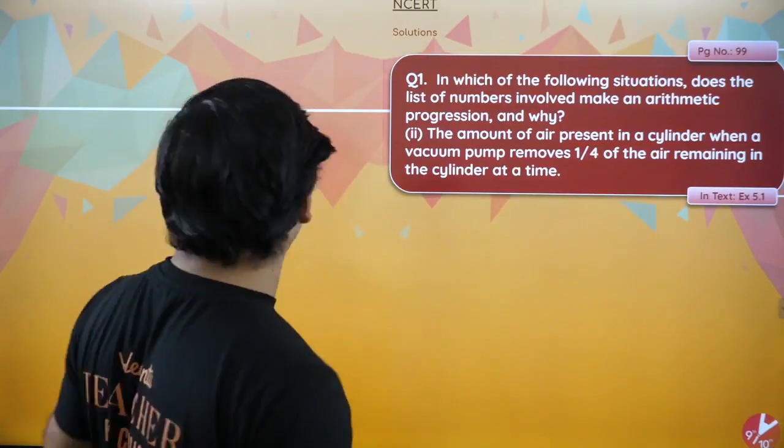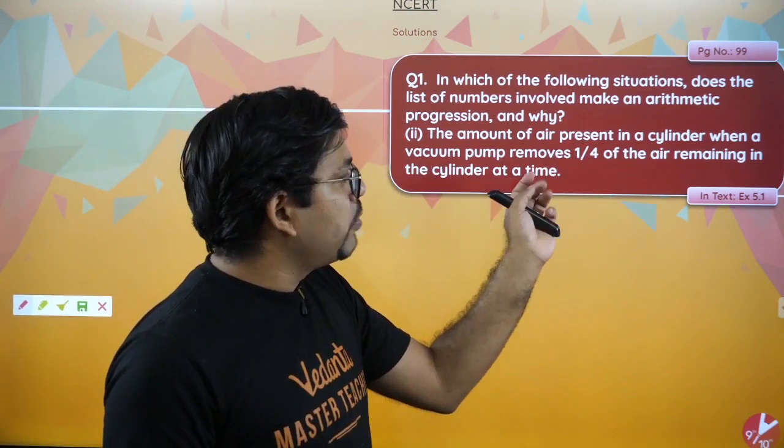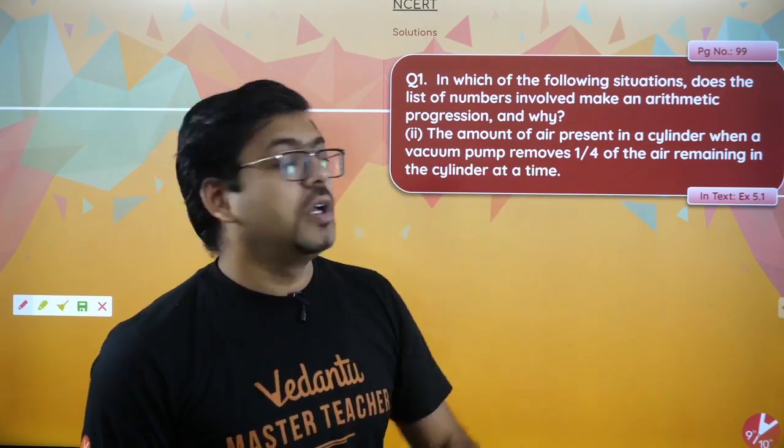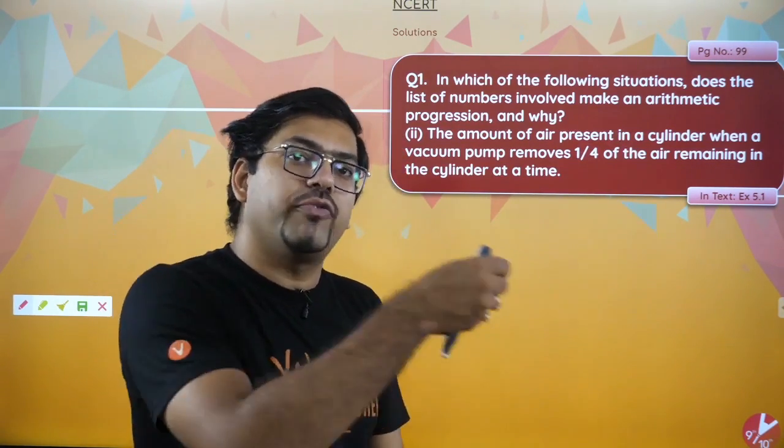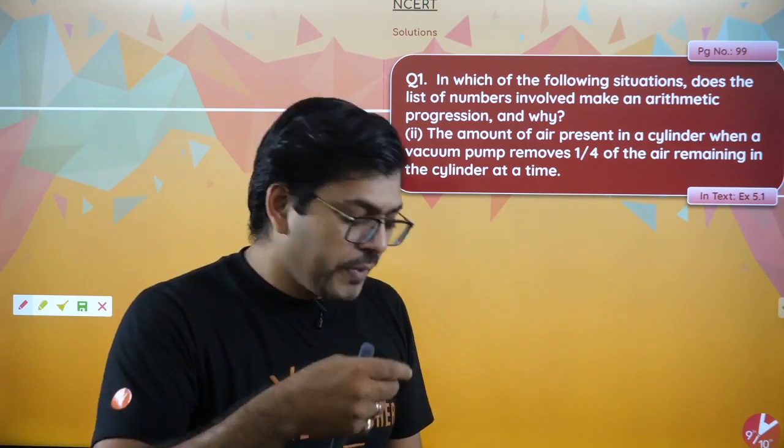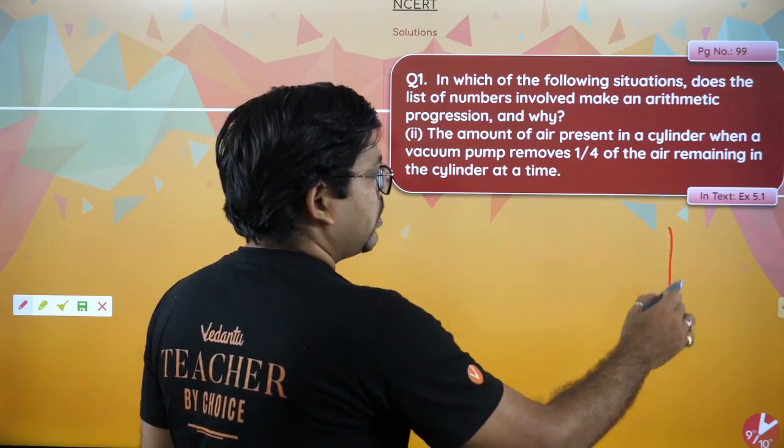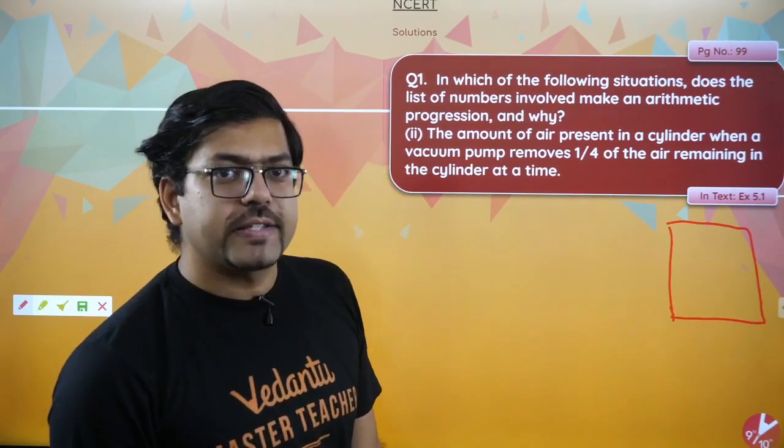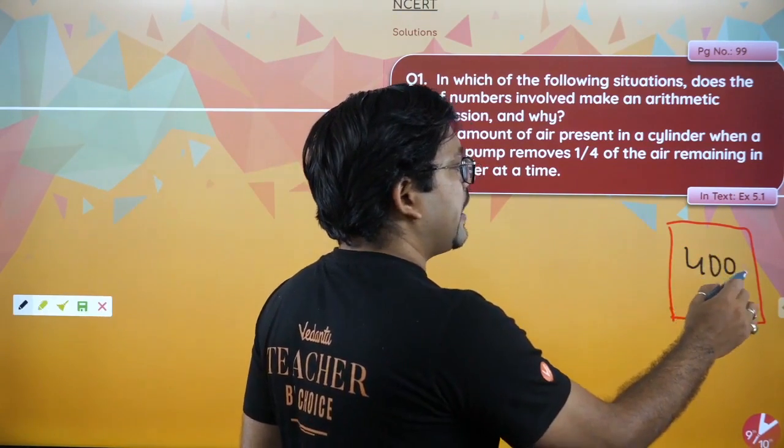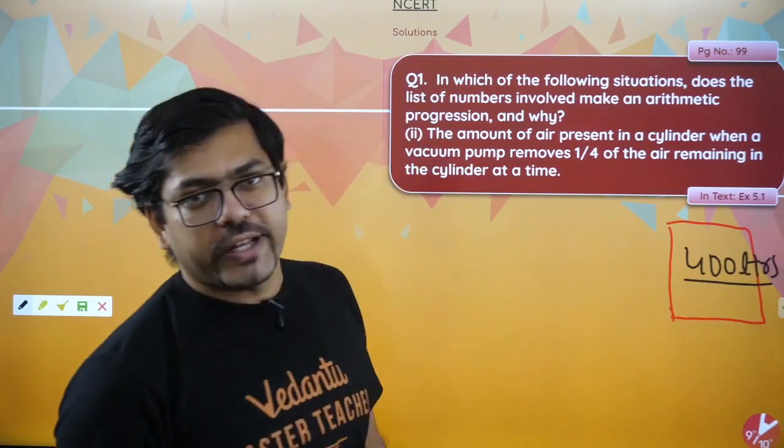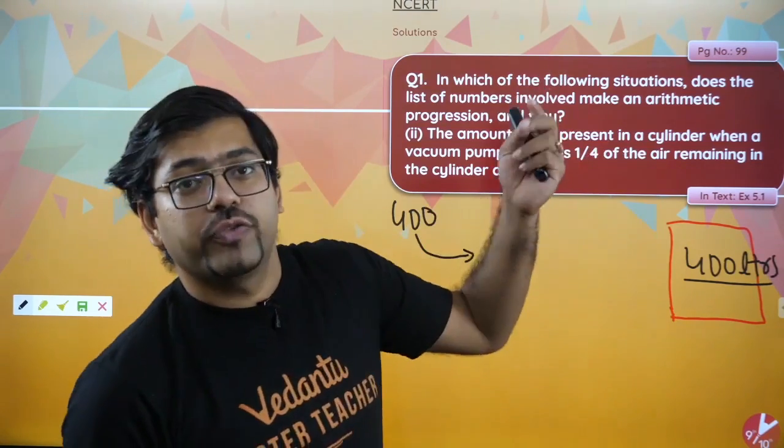Next question. Question says that amount of air present in a cylinder when vacuum pump removes 1 by 4th of the air remaining in the cylinder at a time. Okay. The question is that there is a pump. It removes one-fourth from the cylinder every time. Whatever is in the cylinder, one-fourth is removed. If it is a pump, then it will be out of the air. Then, you have this cylinder. And the cylinder inside you can assume some value. For the sake of simplicity, I am having 400 liters of gas. If it is 400 liters of gas, then the first is 400. Then, you have one-fourth removed.